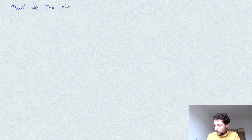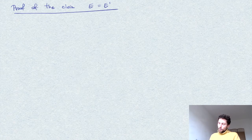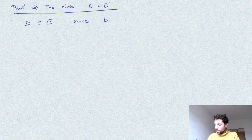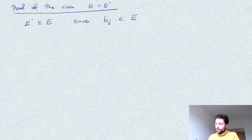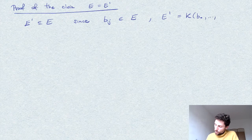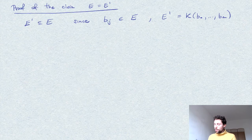Now let's prove the claimed fact that E equals E'. Obviously we have for free that E' is contained in E, since the coefficients b_j come from a polynomial with coefficients in E. Since E' = k(b_0,...,b_n) and these coefficients lie in E, E' is clearly a subfield of E.